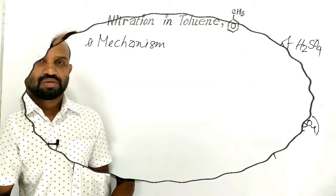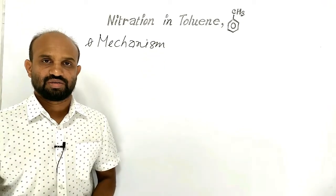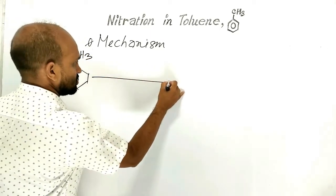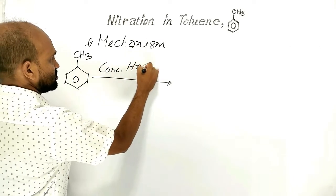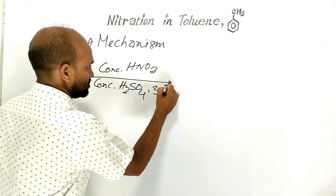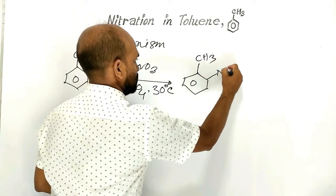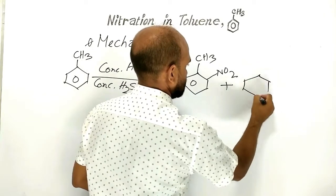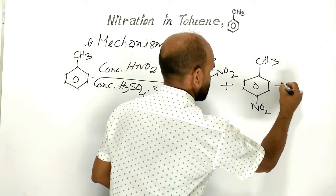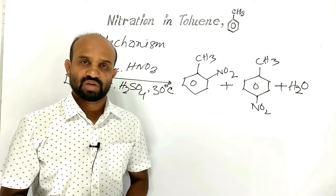Let's move on to the next point: the mechanism of nitration. Let's write the reaction again. Toluene reacts with concentrated nitric acid in the presence of concentrated sulfuric acid at 30 degrees Celsius. Then ortho-nitrotoluene and para-nitrotoluene are formed, and water is formed as a by-product. Let's see the mechanism step by step.